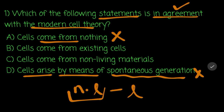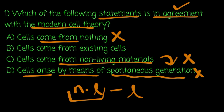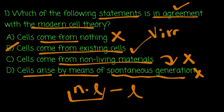In Francesco Redi, there are a lot of stories from the learning. This means that we are going to disprove the spontaneous generation theory. Cells come from living materials. Cells come from existing cells where the values are.